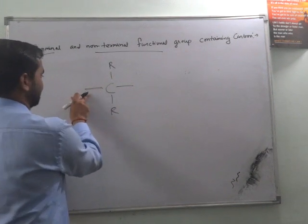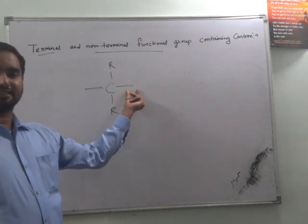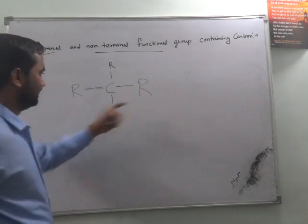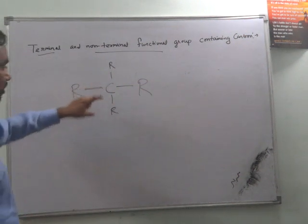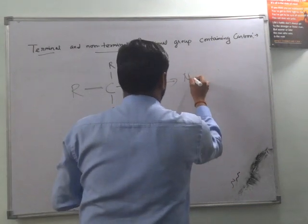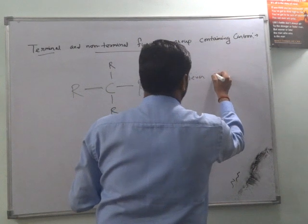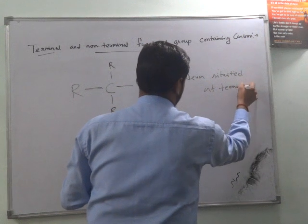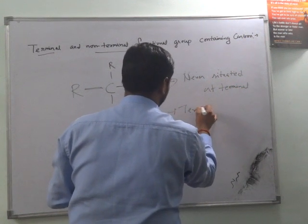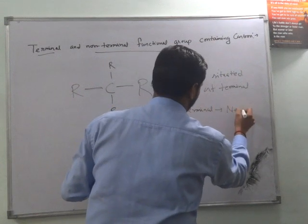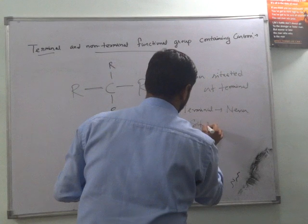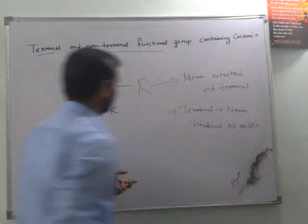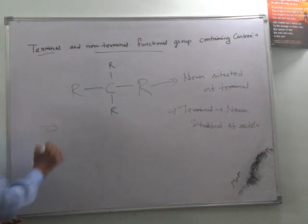Because there is a possibility to interact with this side also and there is a possibility to interact with that side. So it is open to both sides and anything can be reacted or can be added to complete the octet. So it is called non-terminal. The non-terminal is never situated at terminals.